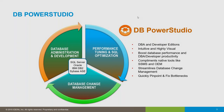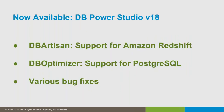RapidSQL primarily helps you boost database developer productivity by writing queries really fast, and it also helps you build and look at any kind of optimization you would want to do with your databases. Today we'll primarily be focusing on Microsoft SQL Server, and I'll also show you how a query can be built using Oracle. One of the key benefits in the new Power Studio family is that we've added support for Amazon Redshift, and for the DB Optimizer product we've added support for Postgres.